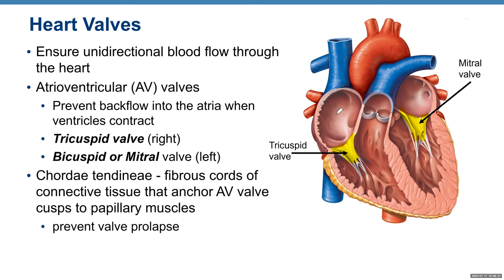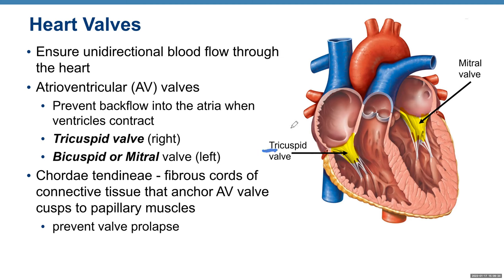The AV valves have specific names: the tricuspid valve on the right side and the bicuspid or mitral valve on the left side. Chordae tendineae are fibrous cords of connective tissue that anchor AV valve cusps to the papillary muscles, preventing the valves from prolapsing back into the atria when the ventricles contract.